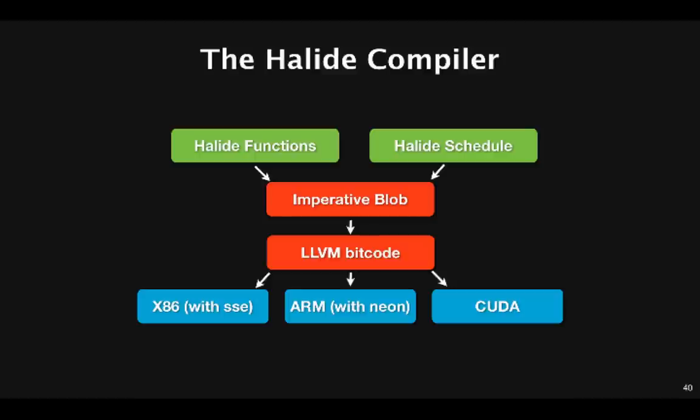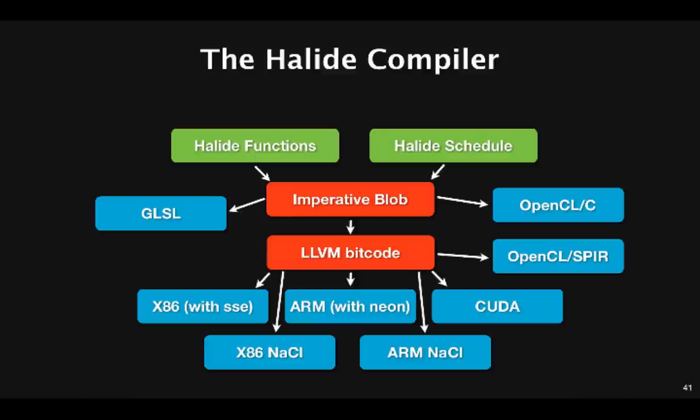Internally, Halide leans very heavily on the LLVM compiler infrastructure. We take the Halide function definitions and the schedule, and combine these to produce a single blob of scheduled imperative code in Halide's internal representation. After some basic optimization passes, this is then converted to LLVM's internal representation, and then LLVM compiles it to vectorized x86 or ARM code, or to the graphs of CUDA kernels and the CPU code that is required to launch and manage them. Recently, we've been adding some more targets. We can generate GLSL shaders, we can generate Native Client x86 and ARM if you want to embed some Halide computation in your browser, and we can also generate OpenCL shaders.